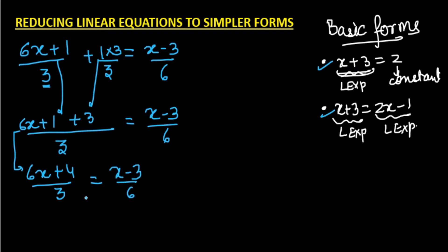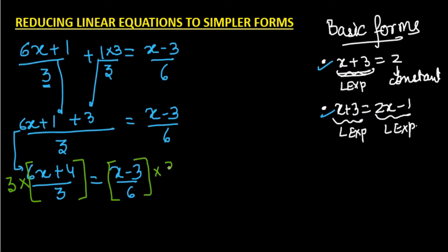Now we want to find the value of x, so we need to get rid of the 3 in the denominator. We multiply both sides by 3 — by the law of balancing, both sides must be multiplied. The 3s cancel out, and we are left with 6x + 4 = (x − 3)/2.